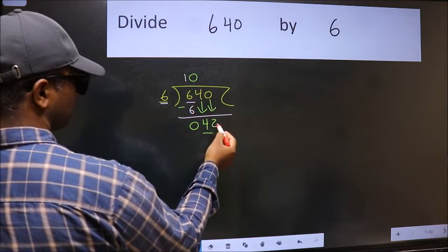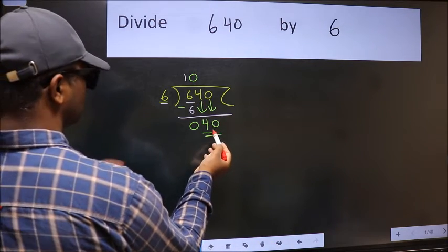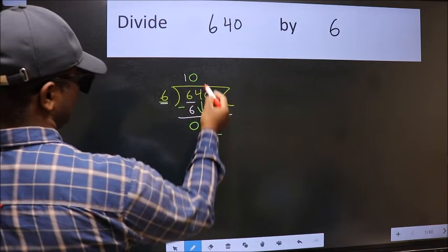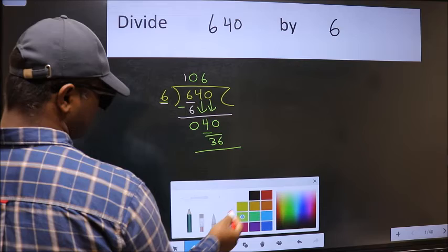Now 40. A number close to 40 in the 6 table is 6 sixes, 36. Now we subtract.